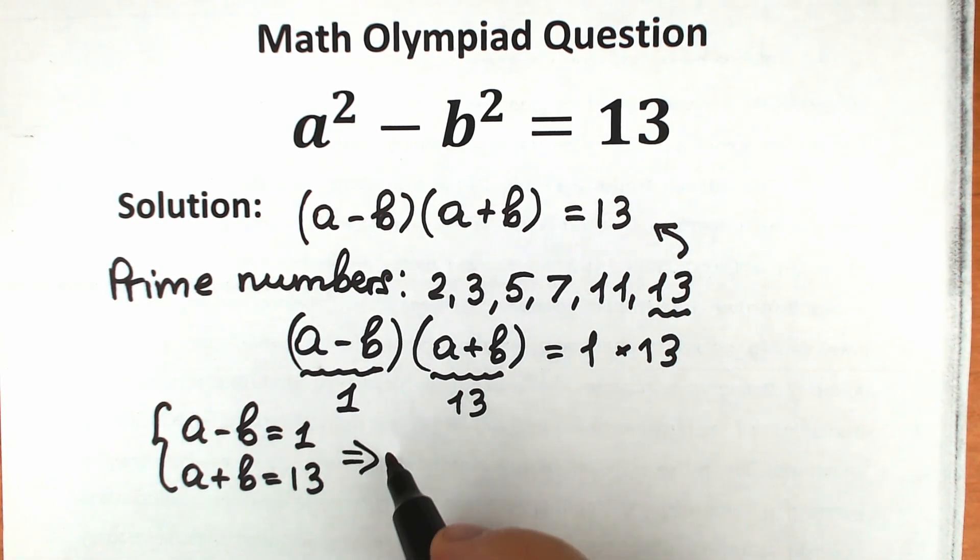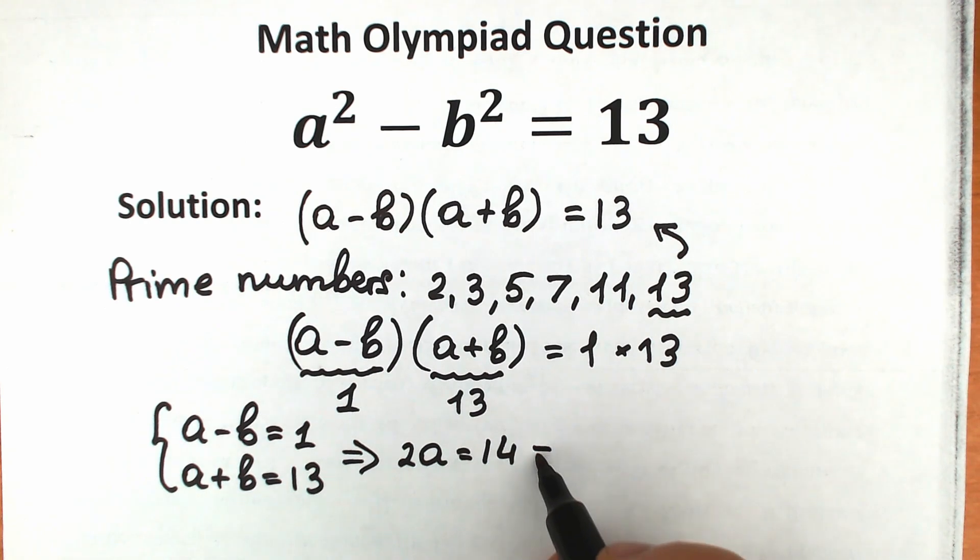So from this equation, we can write it as 2a equals 14. So if we add it, we have 2a equals 14, and from here, a is equal to 7.